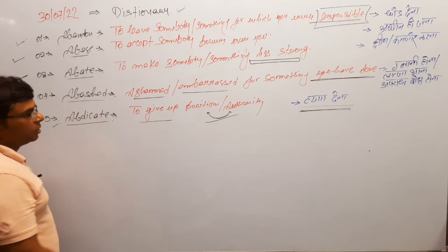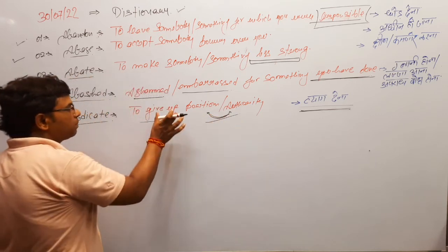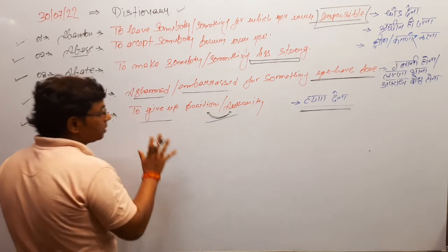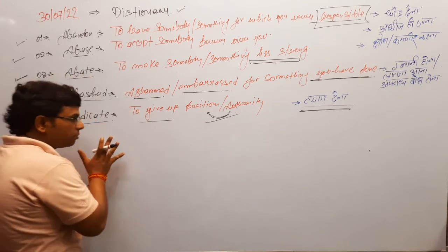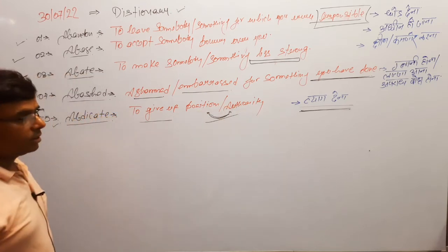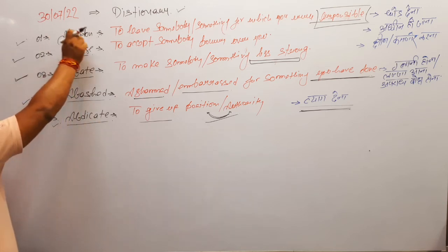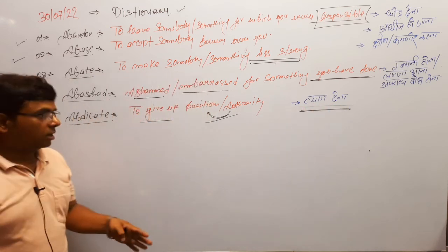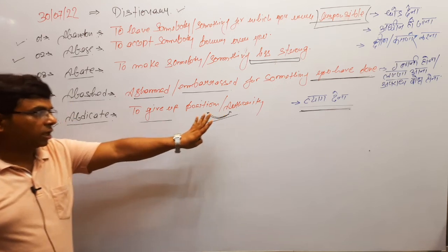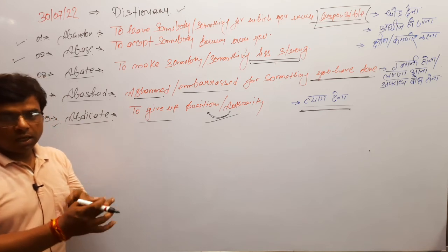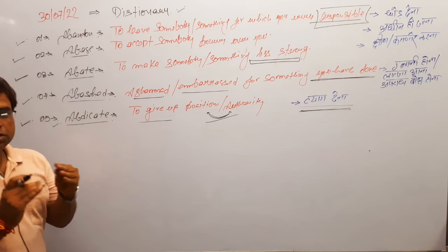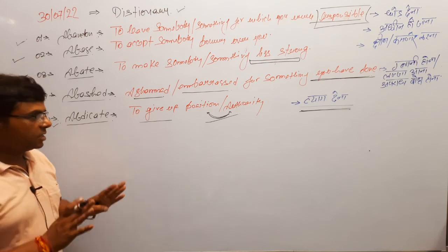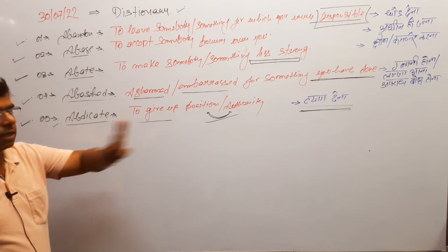The fifth word is 'abdicate': to give up a position or authority. Suppose you are in a particular position of authority and you leave it — but that doesn't mean you left in the middle without informing anyone. It means you are formally communicating: 'I am abdicating.' You are not abandoning; you are abdicating. In Hindi: tyaag dena, wahaan se chale jana. Abdicate means to give up the position or authority with no means of returning, no greediness, no bargaining, and no blackmailing. It is simply giving up the position or authority you were in.